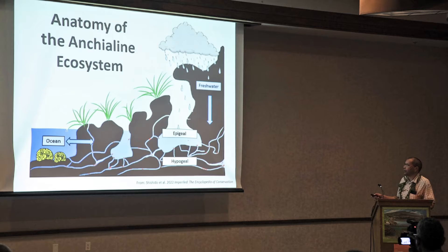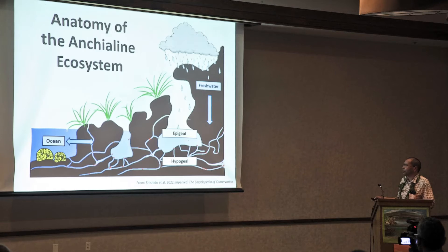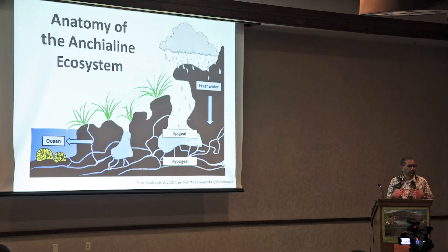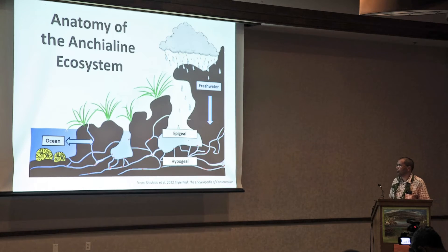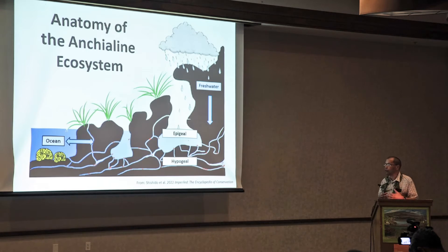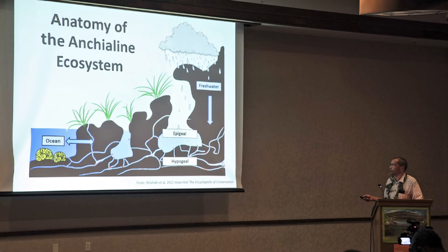In the epigeal zone, sunlight comes down into this pond where you can see the shrimp congregating and feeding on the bacterial-algal film that is growing in these habitats. That's where this interaction occurs between the microbial community — taking advantage of these ecosystems — interacting not only with the atmosphere and environment but also with the organisms that live in them.